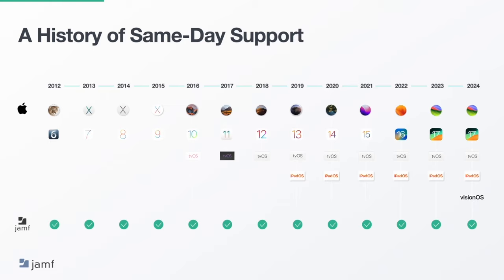If your power users are craving that hot new feature from Apple, it is easy to kick off a mass operating system upgrade across your entire Apple fleet. On the flip side, if you want to pause the availability of a new operating system, you can delay OS upgrades for up to 90 days so your team can take time to test and validate before making the OS available to everyone. Jamf remains laser-focused on helping you succeed with Apple, and same-day support is one major benefit you'll enjoy for choosing ecosystem management.